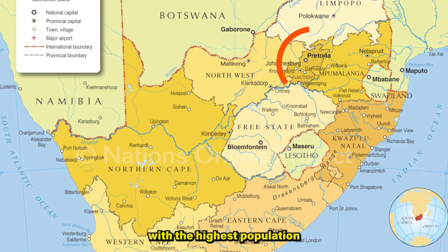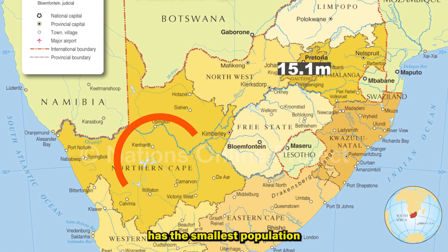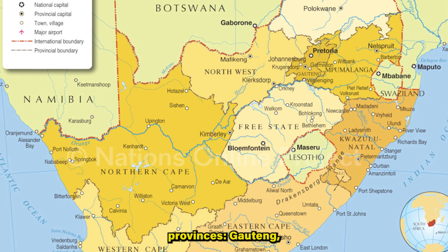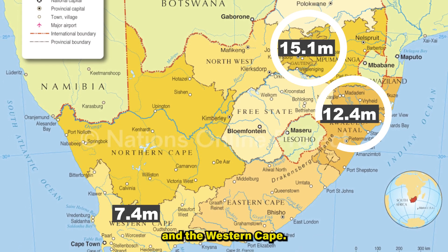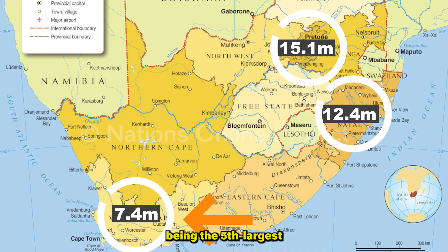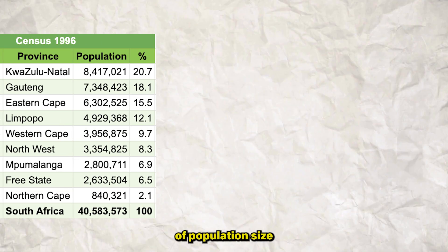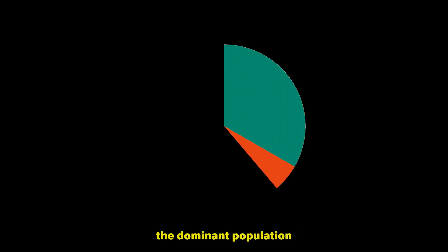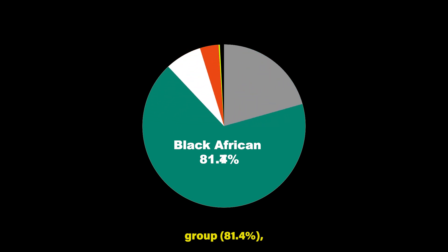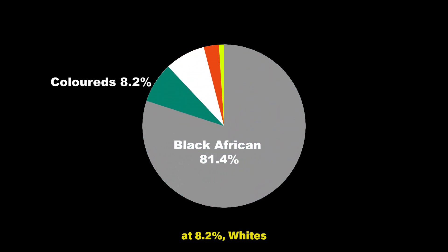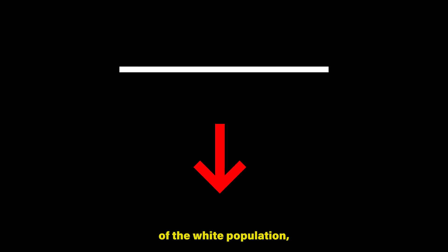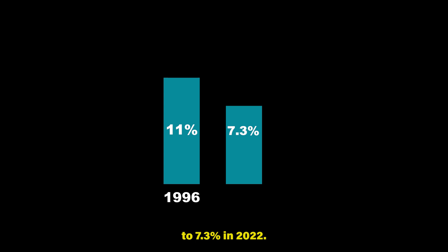Gauteng remained the province with the highest population at 15 million, while the Northern Cape has the smallest population at 1.3 million. About 56% of the country's population lives in three provinces: Gauteng, KwaZulu-Natal, and the Western Cape. The Western Cape has moved from being the fifth-largest province in terms of population size in 1996 to being the third-largest in 2022. Black Africans remained the dominant population group at 81.4%, followed by Coloured at 8.2%, whites at 7.3%, and Indians/Asians at 2.7%. There has been a steady decline in the proportion of the white population from 11% in 1996 to 7.3% in 2022.